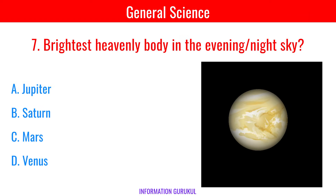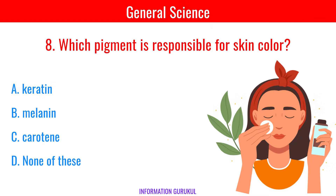Brightest heavenly body in the evening sky? Venus. Which pigment is responsible for skin color? Melanin.